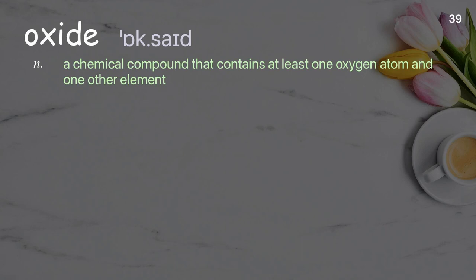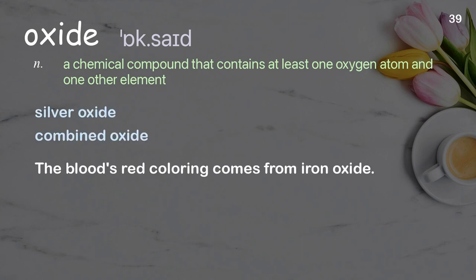Oxide: a chemical compound that contains at least one oxygen atom and one other element. The blood's red colouring comes from iron oxide.